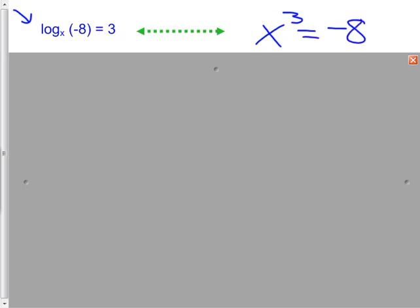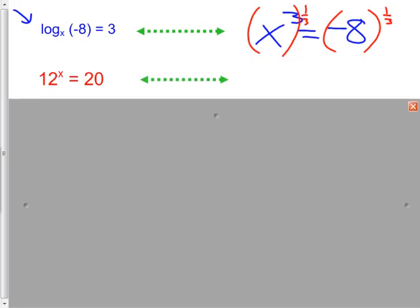And then you could just ask yourself, what to the third is negative 8? What's the answer? Negative 2. And if you were not so good at that, you could say to the 1 third power, to the 1 third power, and your calculator would tell you it was negative 2. Let's do another one. This one's in exponential form. Write me a log for it. And I'll tell you if you wrote it right. Did you write it already? Good. Log.